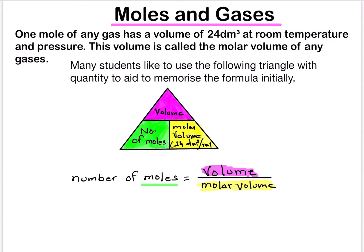Today we are going to study about moles and gases. One mole of any gas has a volume of 24 dm³ at room temperature and pressure. This volume is called the molar volume of any gases.